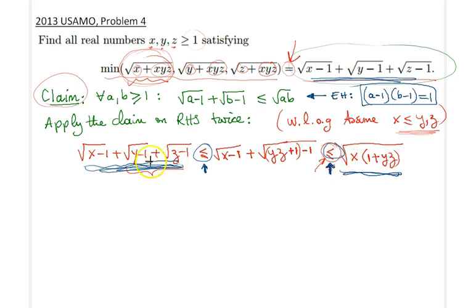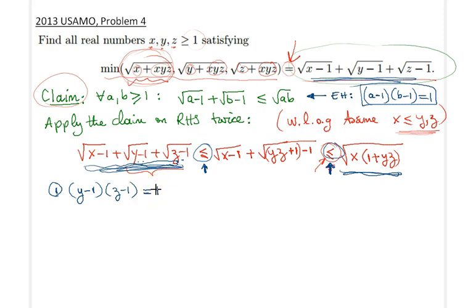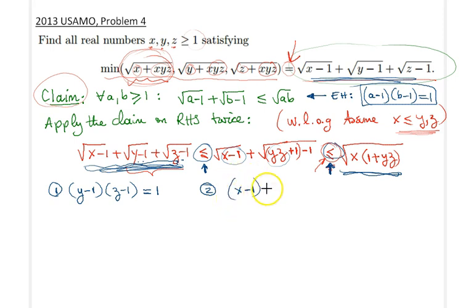In the first application, we applied the claim to the second and third terms, so the first condition is: (y−1)(z−1) = 1. In the second application, with x and (yz + 1), the condition becomes: (x−1) · yz = 1. Now that we have these two conditions, it is time to find all solutions x, y, z satisfying the original equation.